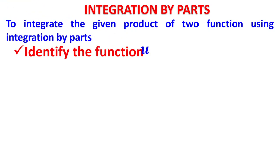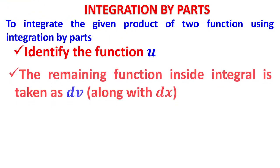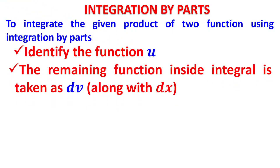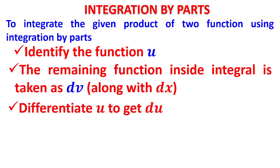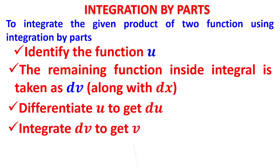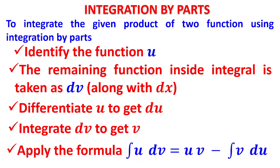The steps in integration by parts: first, identify the function u; then the remaining part inside the integral sign becomes dv. Immediately differentiate u to get du, and integrate dv to get v. Then apply the formula: integral u·dv = uv minus integral v·du. Identification of u is very important.